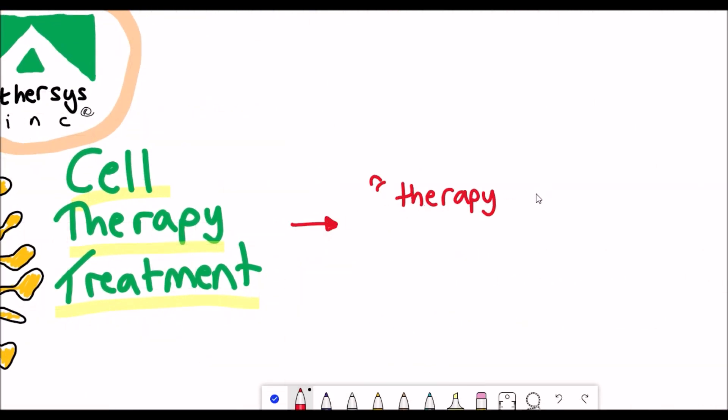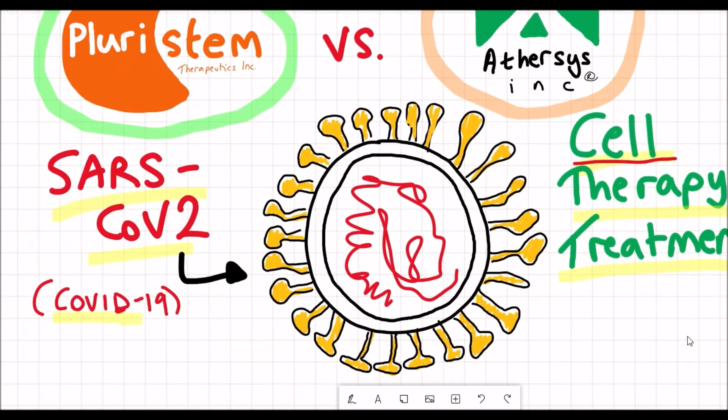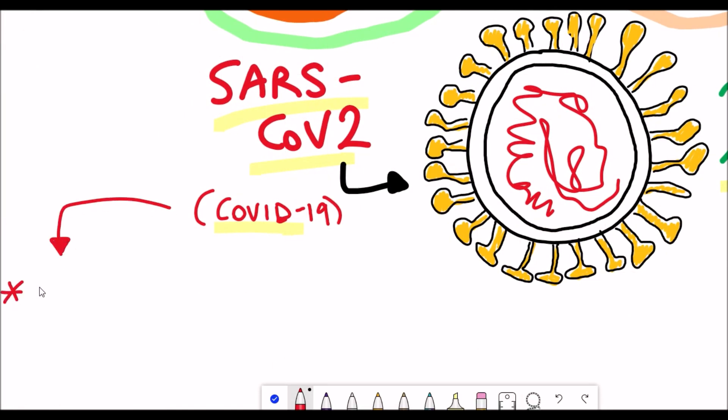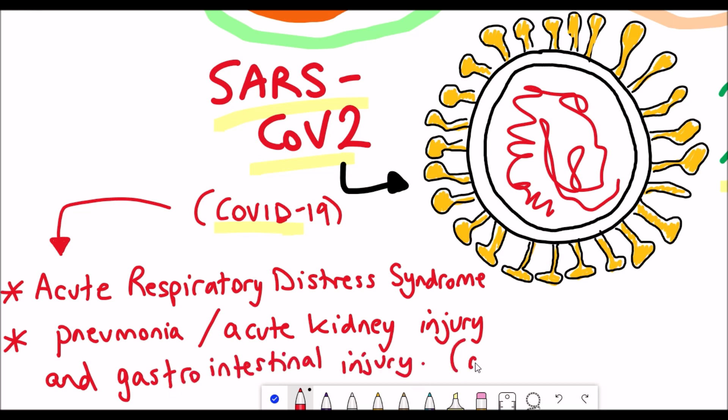Both of these companies are developing cell therapy treatments, which are therapies in which viable cells are injected, grafted, or implanted into a patient. Athersys and Pluristem Therapeutics are not the only companies developing cell therapy treatments, but they're the ones I'm going to talk about. Both are trying to use their products to reduce and alleviate symptoms associated with COVID-19 patients. This includes acute respiratory distress syndrome, otherwise known as ARDS, but also potentially other complications such as acute kidney injury and gastrointestinal injury.